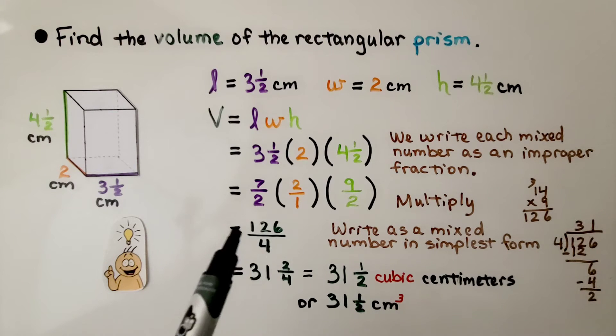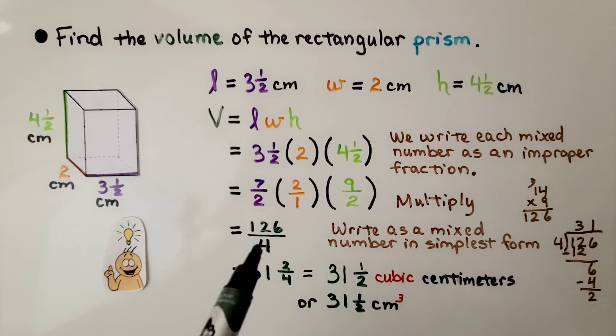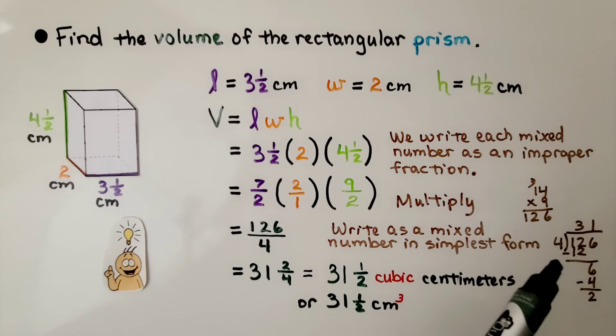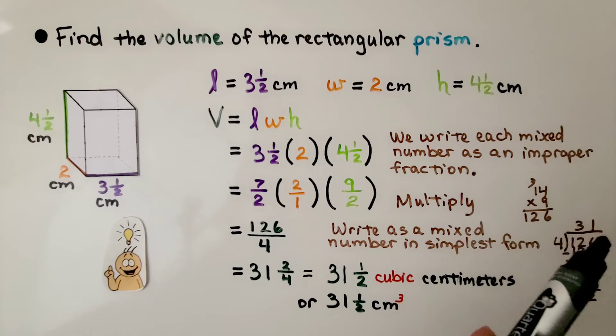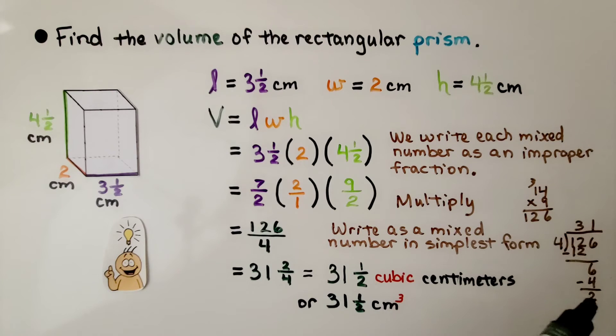We need to write it back as a mixed number in simplest form. So what we do is, because this is a little division problem, isn't it? We have one hundred twenty-six divided by four. Do a little long division on the side, and we see that we get a quotient of thirty-one.